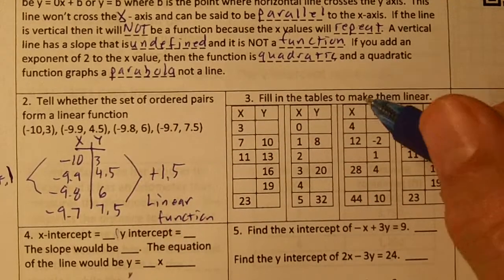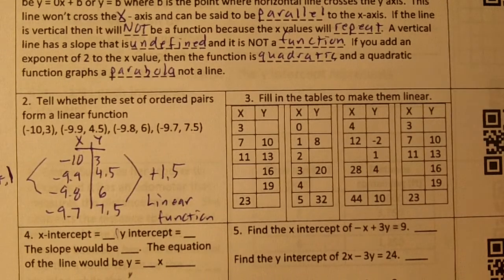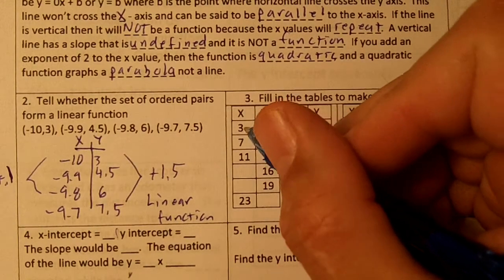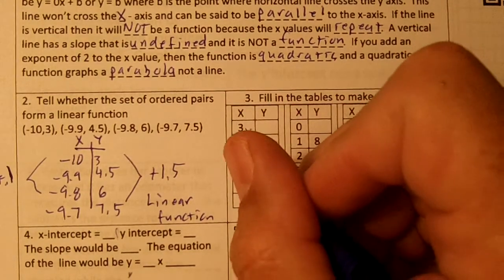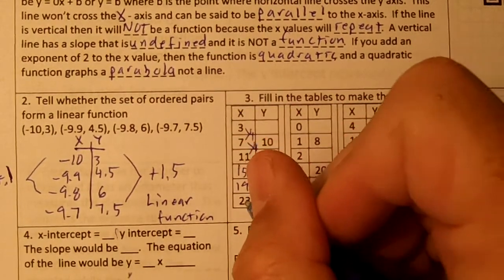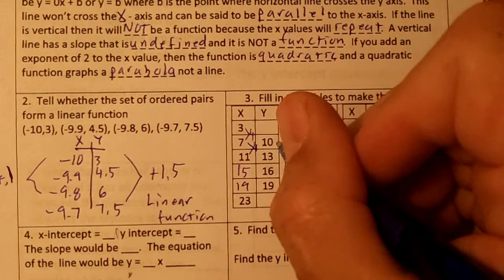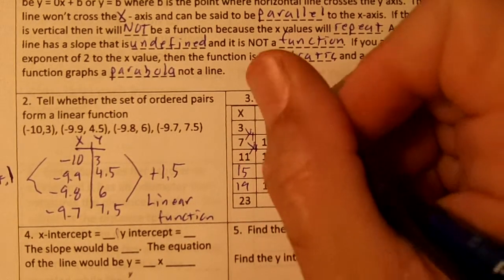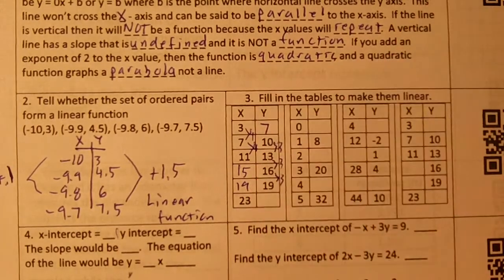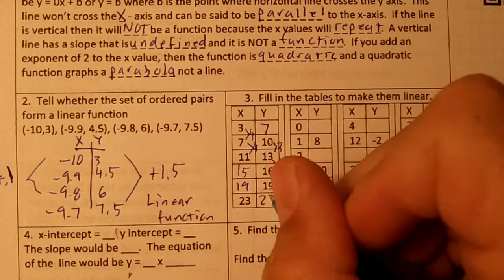Now then, let's do the charts on number 3. Fill in the tables to make them linear. If you notice here, the x values are increasing by 4. I'm just going to keep adding 4. This would be 15, 19, and the next one would be 23. The y values are increasing by 3. So we could go backwards. 10 minus 3 is 7, and 19 plus 3 is 22.